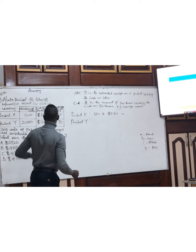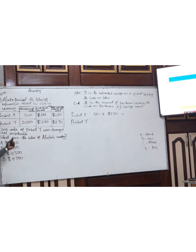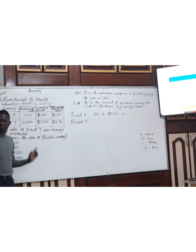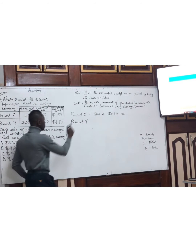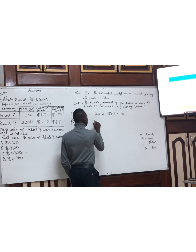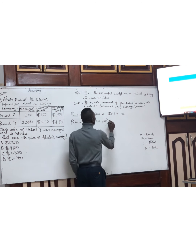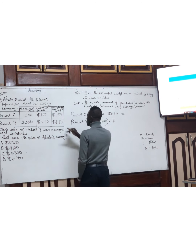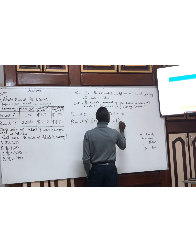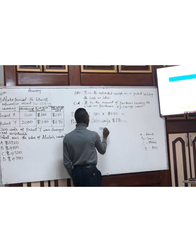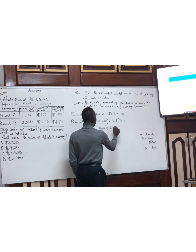For Product Y, they said 200 out of Product Y were damaged and unsellable — that means they are out. So for Product Y, we have 2,000 minus 200, multiplied by the NLV of 1.90. That means for Product Y, we have 1,800 multiplied by 1.90.